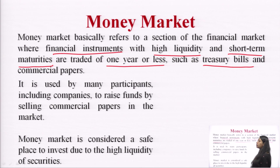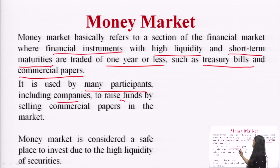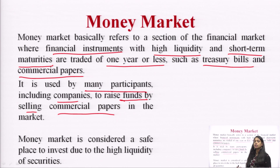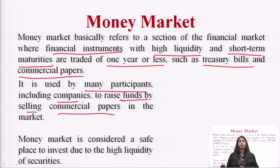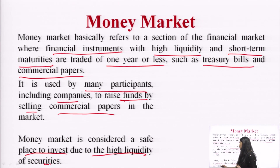The components traded in the money market include treasury bills and commercial papers, which we will discuss further. Many companies use the money market to raise funds — commercial paper is one such instrument. Money market is considered a safe place to invest due to the high liquidity of securities, as near-cash assets can be easily converted into cash.